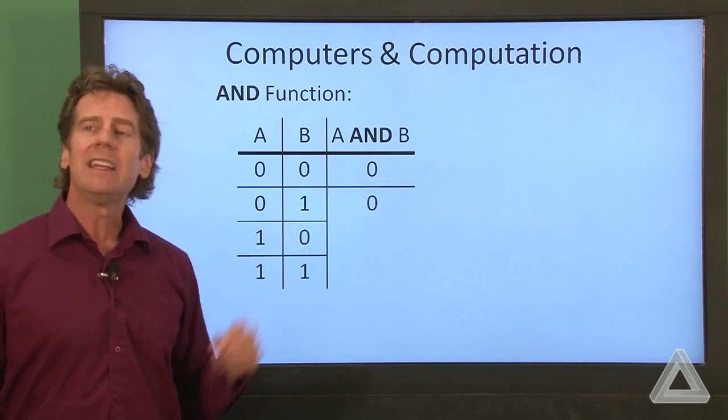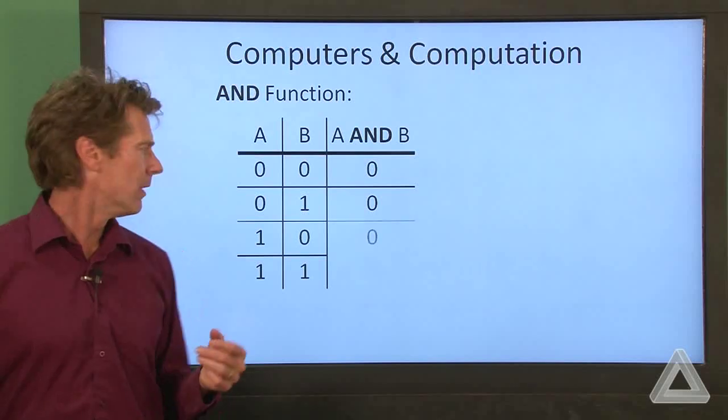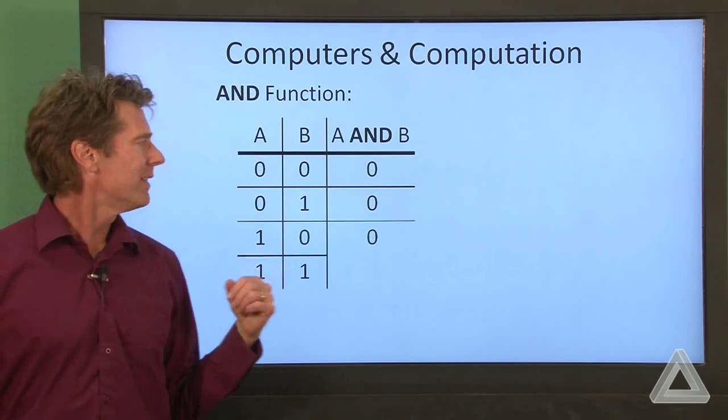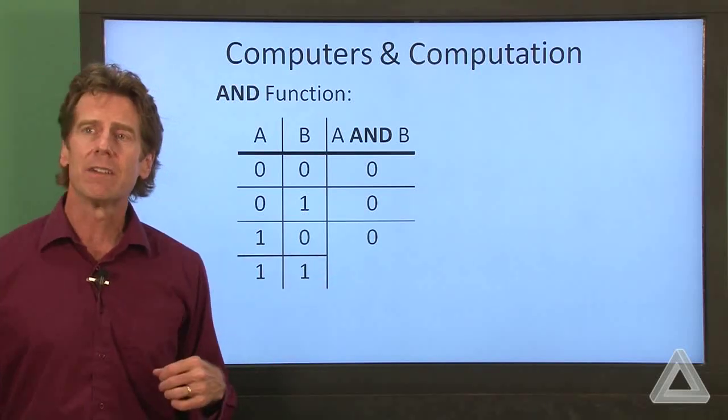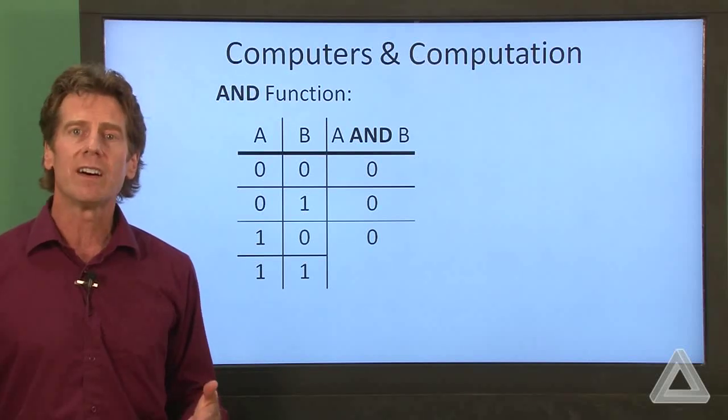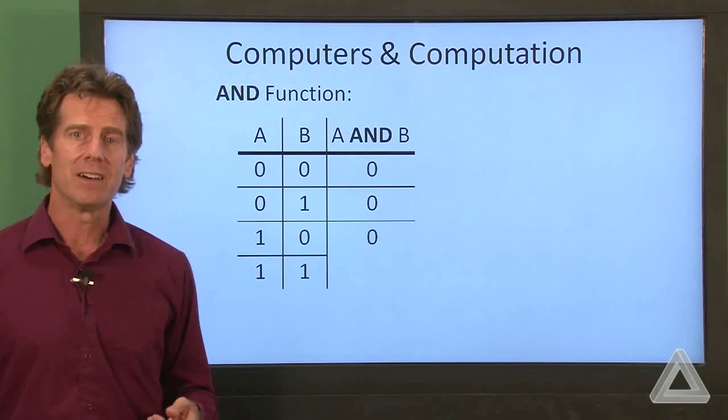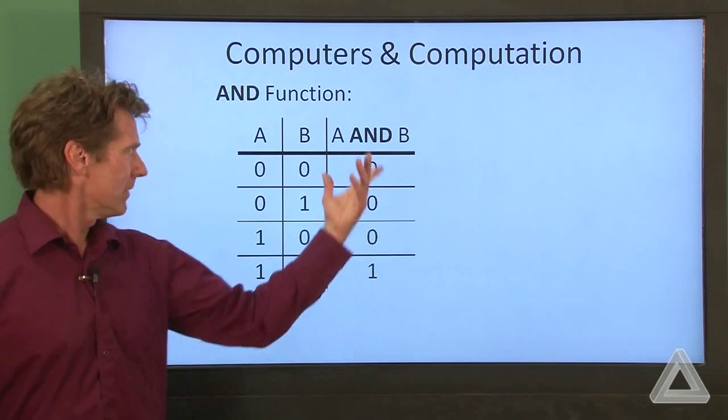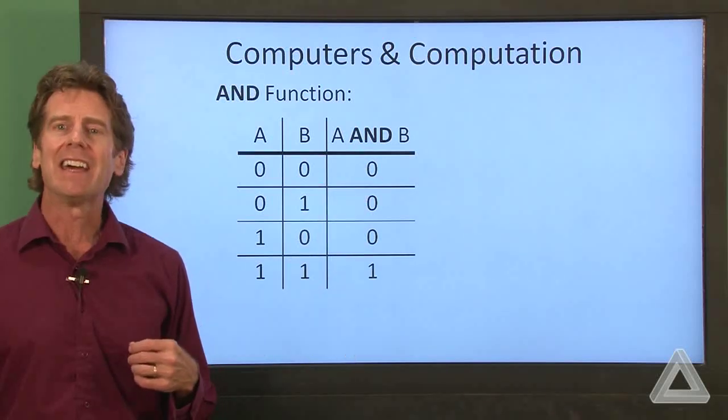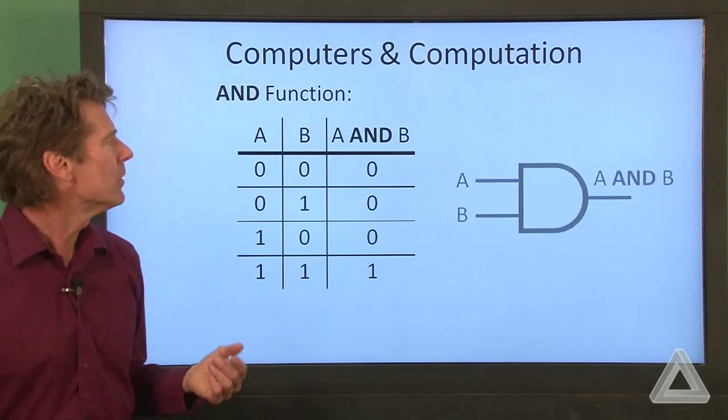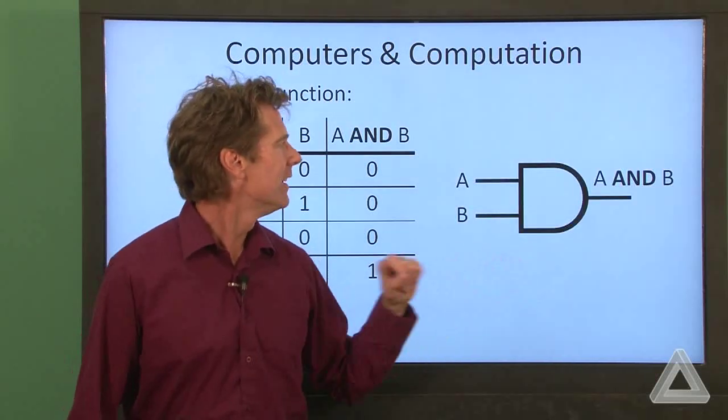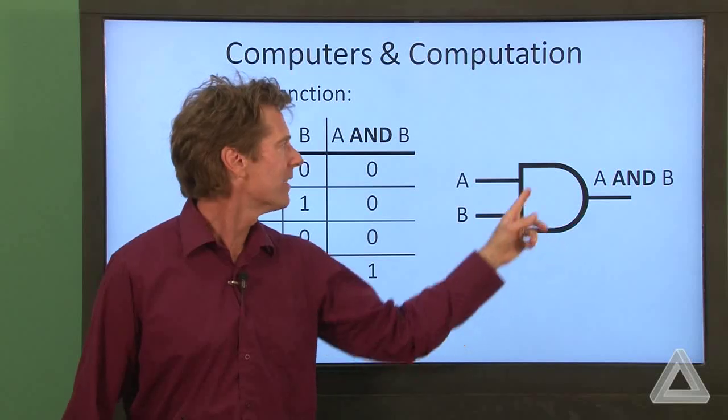If A is zero, B is one, the output's still zero. And if A is one, B is zero, the output's still zero. The only way we get one on the output is if both A and B are one. So again, we can see where the name AND comes from.